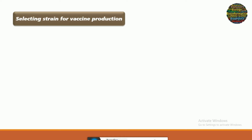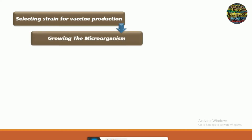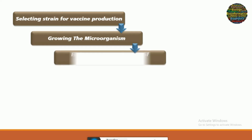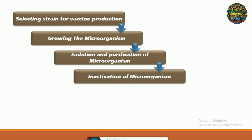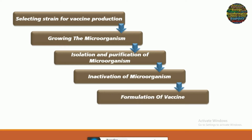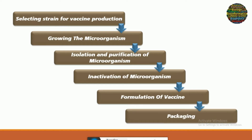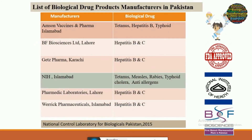So how do we develop a vaccine? The first step in vaccine development is to select a suitable strain for vaccine production, then grow those microorganisms in a lab or at a high level in pharmaceutical industries. These microorganisms are then either inactivated — they are killed — or they are attenuated using different chemicals and methods, and then these vaccines are packaged and used to protect against those microorganisms.